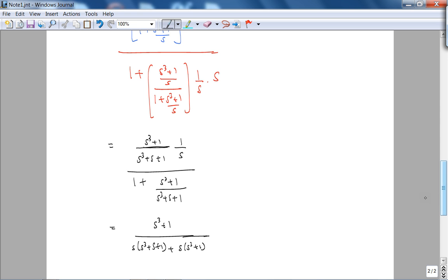So basically my transfer function becomes C of S over R of S. If you simplify this, I get S cubed plus 1 on top over 2S to the 4th plus S cubed plus 2S. Hopefully I didn't make an arithmetic error, but let's check our answer in MATLAB. But before we do that, it's a good idea to check our answer again.